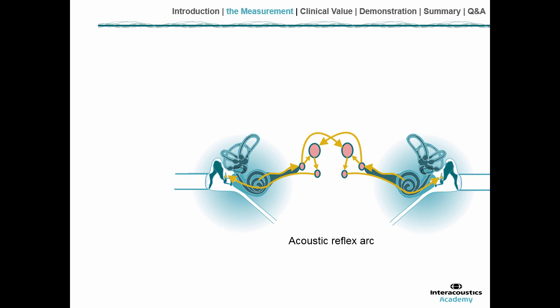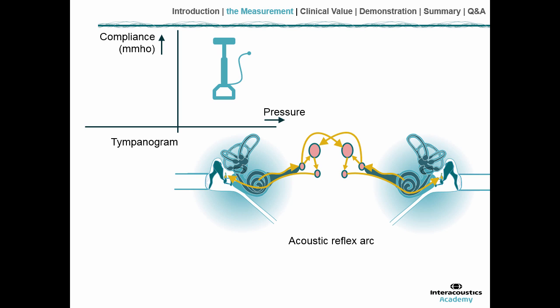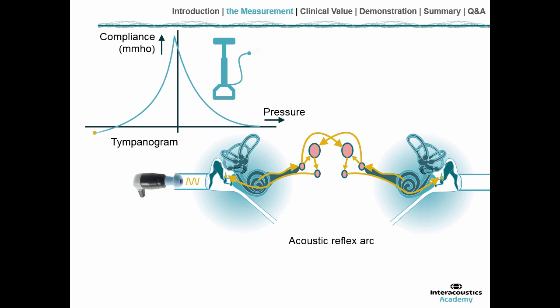Let's explain how we can measure if the acoustic reflex is present or not. We always start by doing a tympanogram: we put a probe in the ear where we present a probe tone, then start changing the pressure. The starting point of the tympanogram is at a positive pressure, and we change the pressure while measuring how easy it is for sound to pass through the middle ear. When the tympanogram is ready, we place ourselves on the peak of the tympanogram.